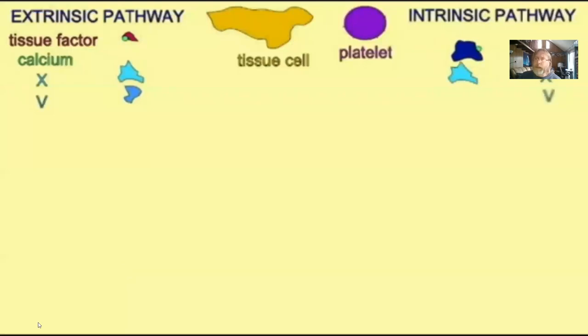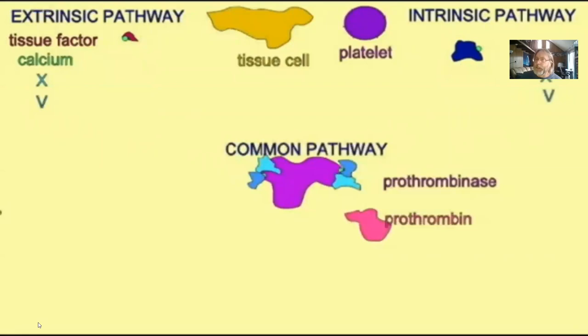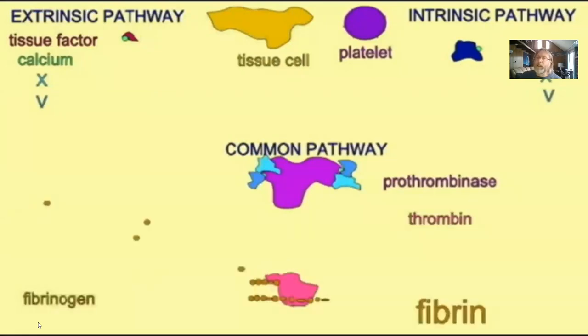That was a quick introduction to red blood cells, white blood cells, and platelets in humans — what they do — and also some consideration of the evolution of the various types of blood cells in vertebrates.